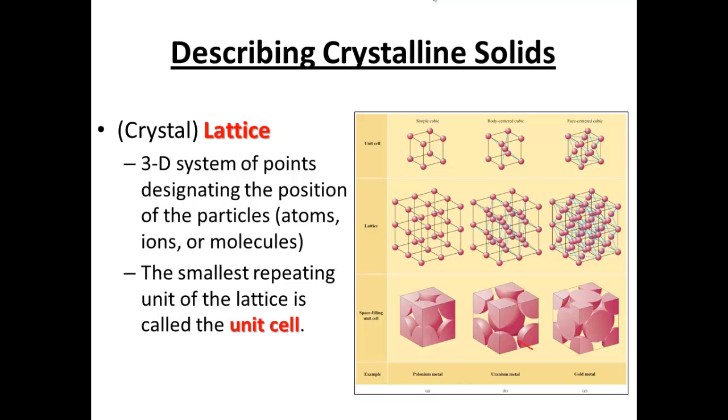Describing crystalline solids a little more in detail. So crystalline solids always have what we call a lattice, or a crystal lattice, which essentially is a three-dimensional system of points that designate the position of the particles. Here's some different ways we can organize them. And the particles that occupy those points, that's kind of a big idea, because they could be atoms, they could be ions, or they could be molecules. And depending on which you have, it determines which type of solid you have.